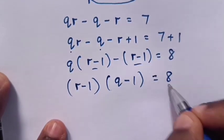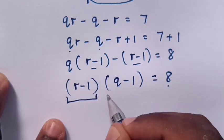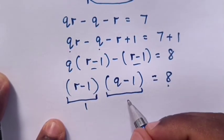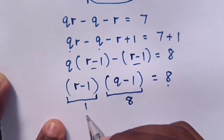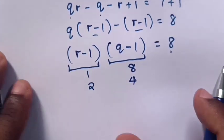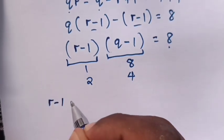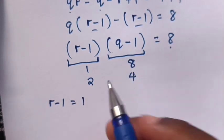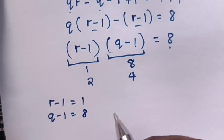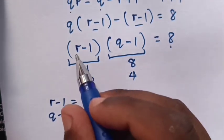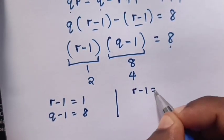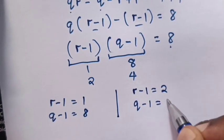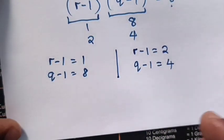Now to get 8, either we multiply R minus 1 times Q minus 1. 1 times 8 equals 8, and 2 times 4 equals 8. So R minus 1 equals 1 and Q minus 1 equals 8, or R minus 1 equals 2 and Q minus 1 equals 4.